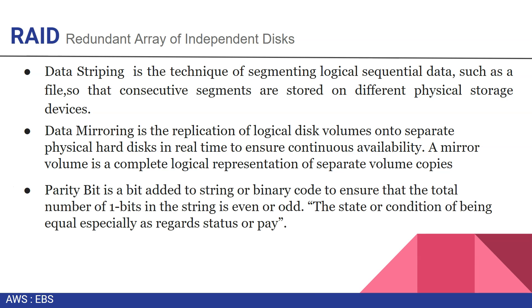The parity bit is a bit added to a string of binary code to ensure that the total number of one-bits in the string is even or odd. It basically validates your bit parity. While transmitting data, it adds one bit and checks whether the bit added as even or odd reaches the destination with the same even or odd status, which validates your bit parity.